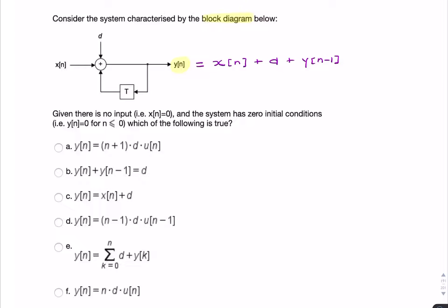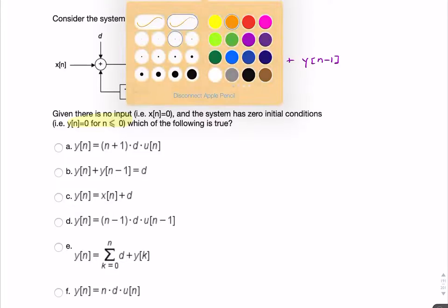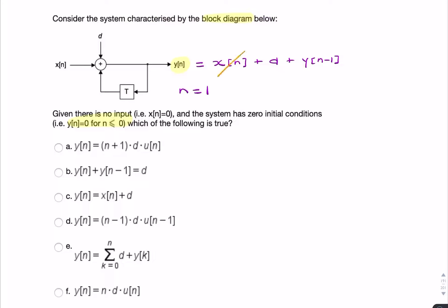We're told that y of n is 0 for n less than or equal to 0. So the first instant in time when y of n minus 1 will not be 0 is going to be when n equals 1. So we're going to start at n equals 1, and x of n is 0.